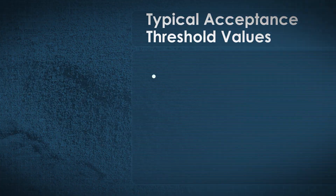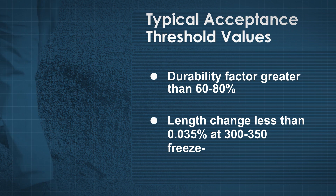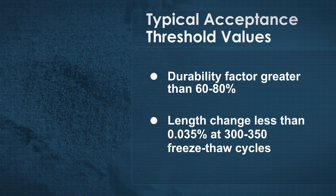The test is more severe than field conditions because the concrete is subjected to rapid freezing and thawing in a saturated state. Therefore, aggregates that pass this test are generally going to perform well in the field. Typical acceptance threshold values include a durability factor greater than 60 to 80 percent and length changes less than 0.035 percent at 300 to 350 freeze-thaw cycles.